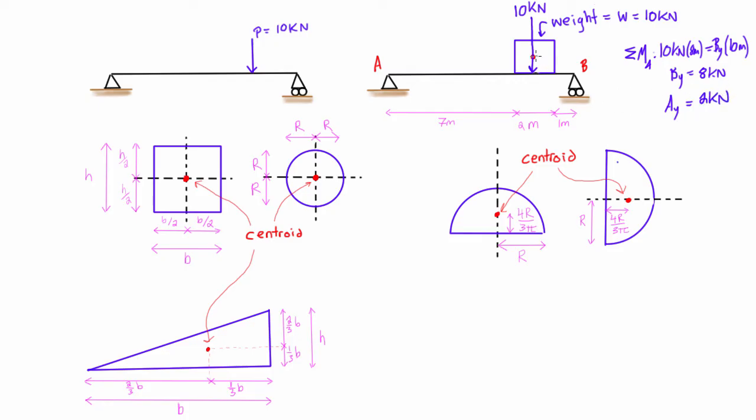So there we go, by knowing where the centroid was of some shape of a known weight, we were able to actually find the reaction forces at point A and B here. So that's pretty useful.